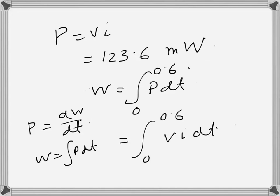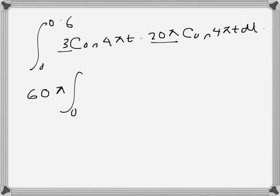And i is 20π cos 4πt dt. So we can take this one and this one outside the integration, so that's 60π. 0 to 0.6, and cos square 4πt dt.